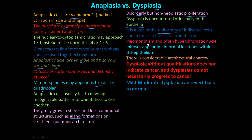There is pleomorphism and often hyperchromic nuclei, which is exactly the same as anaplasia. And there is considerable architectural anarchy — they are just a free-for-all, going wherever they want. However, these are big caveats: dysplasia without certain qualifications does not indicate cancer, and dysplasias do not necessarily progress to cancer.